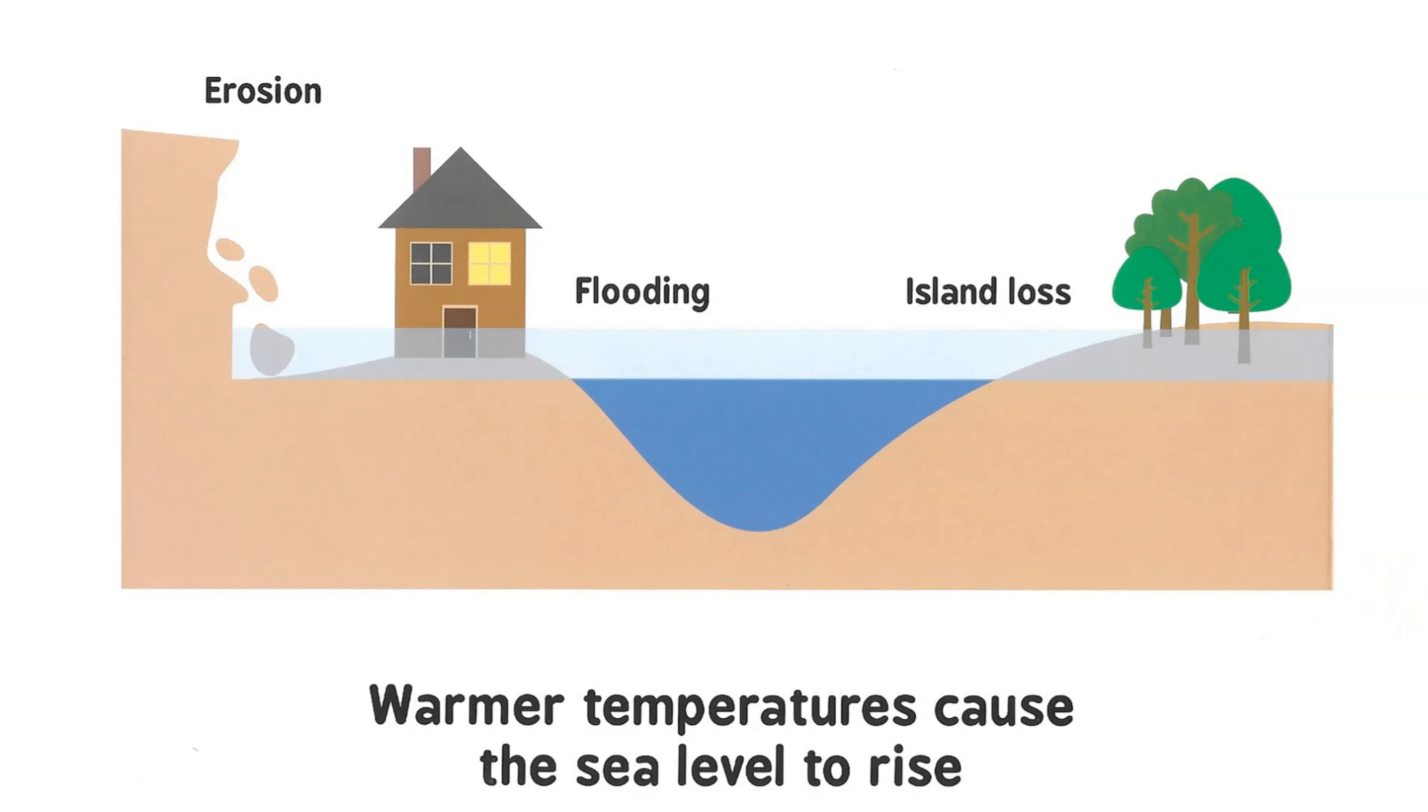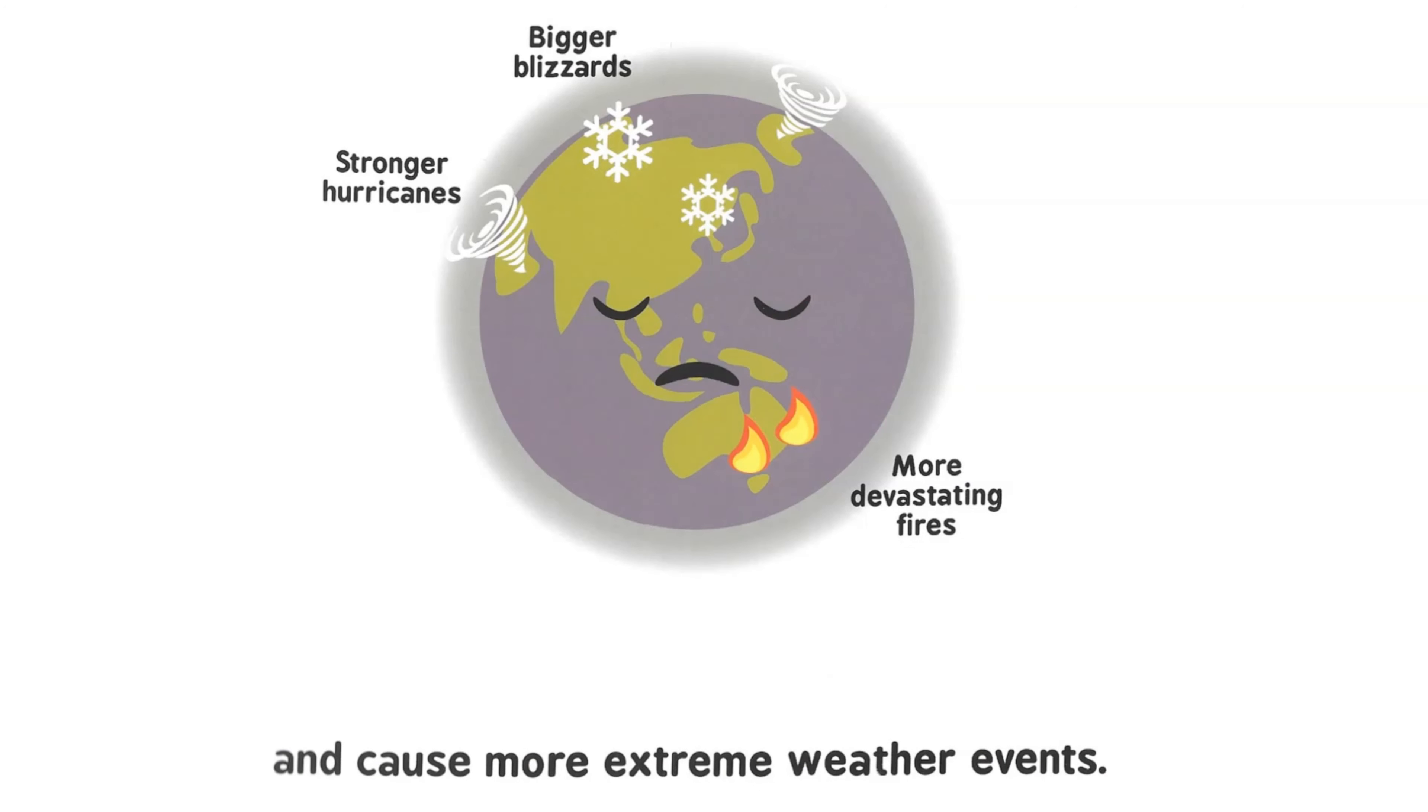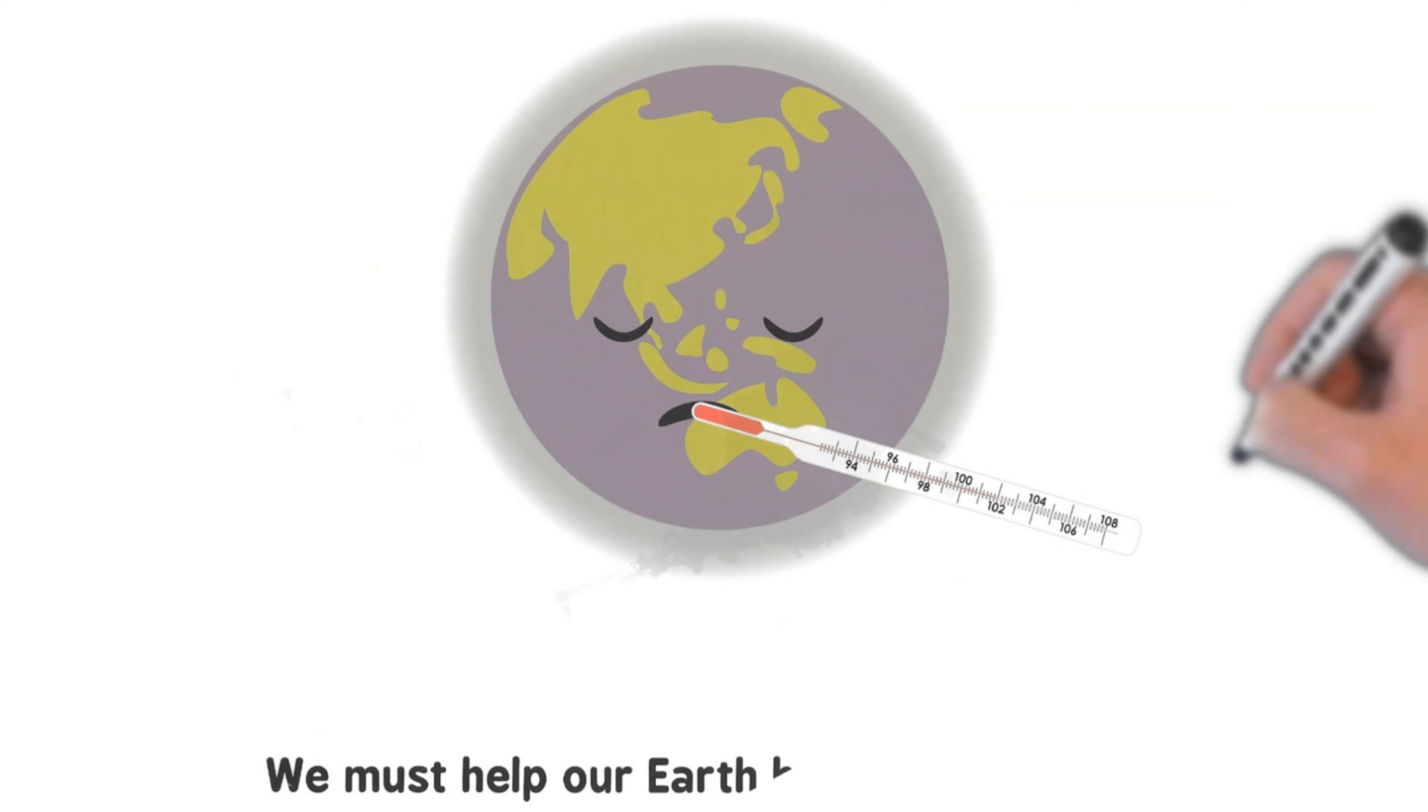Warmer temperatures cause the sea level to rise and cause more extreme weather events. We must help our Earth before it's too late.